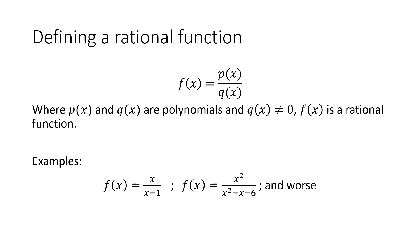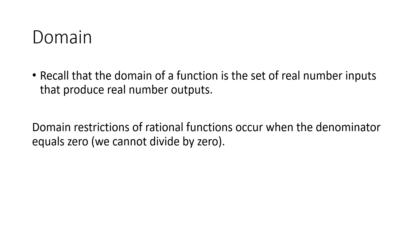One key piece of information we can take from any rational function is the domain. The domain of a function is the set of real number inputs that produce real number outputs — the values you can plug in for x to get real numbers out. For polynomials, the domain is always all real numbers. However, for a rational function, because we're dividing and we can't divide by zero, we can get domain restrictions when q(x) equals zero.